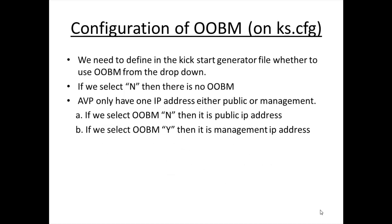Now, the configuration of Out-of-Band Management. First, we need to configure the Out-of-Band Management on the Kickstarter generator file, where we define all parameters including whether Out-of-Band Management is enabled or disabled. If we select N, there is no Out-of-Band Management and AVP has one IP address — if N is selected, it is a public IP address; if Out-of-Band Management Y is selected, it is a management IP address.